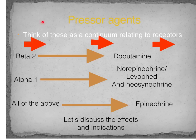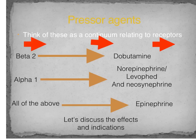Moving on to pure alpha effects, there are two medications: norepinephrine (trade name Levophed) and neosinephrine. Both are given as IV infusions. Norepinephrine is much more commonly used and works primarily on alpha-1 receptors, causing vasoconstriction, which increases blood pressure and peripheral vascular resistance.